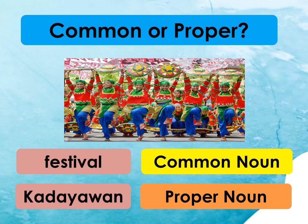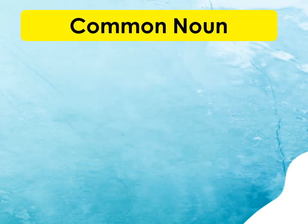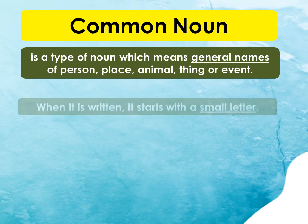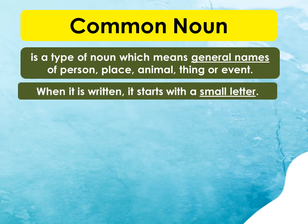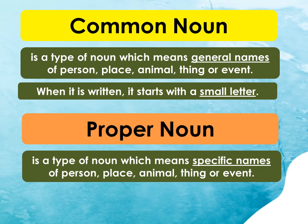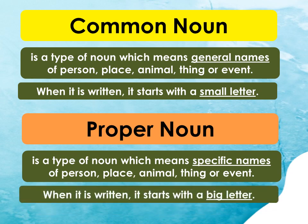Great job, kids! Now, let us have a recap. A common noun is a type of noun which means general names of a person, place, animal, thing, or event. When written, it starts with a small letter. On the other hand, a proper noun is a type of noun which means specific names of a person, place, animal, thing, or event. When written, it starts with a big letter.